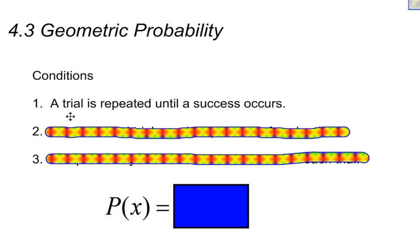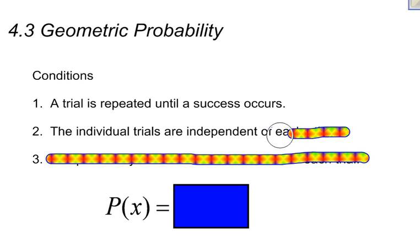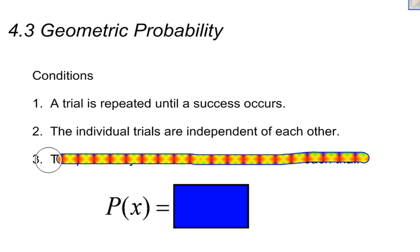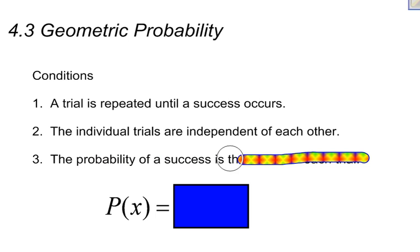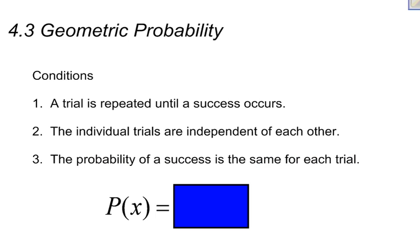The second condition that is true about geometric probability is that the individual trials are independent of each other — there's no dependency. And the last condition that needs to be met is that the probability of a success is the same for each trial, which is the same requirement as it was for binomial.